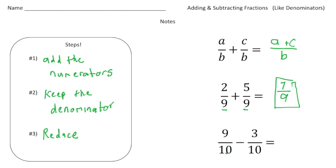The last one, we have nine tenths minus three tenths. We have common denominators of 10, so we can do nine take away three, which is six. We keep the denominator, and six tenths we can reduce down to three fifths. So three fifths is our final answer for that one.